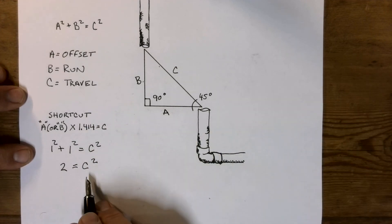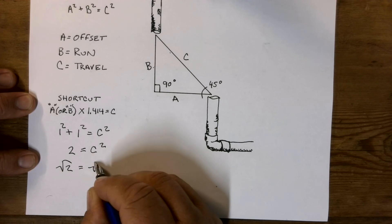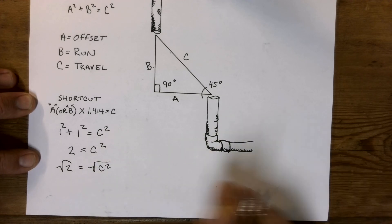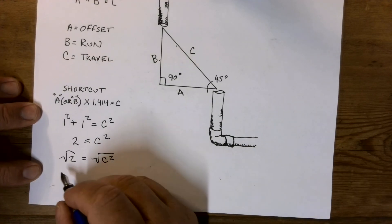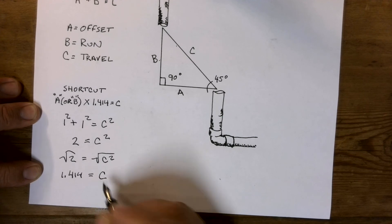Now, in order to find C, and this is equal terms, I go ahead and take the square root of 2 is equal to the square root of C squared. Guess what the square root of 2 is? It is 1.414, and then that equals C.